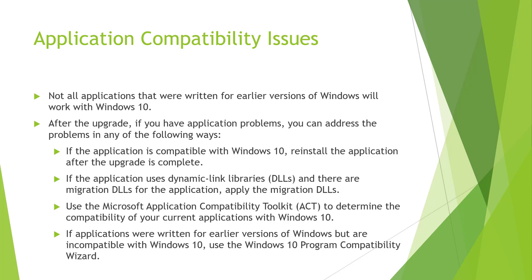Applications written for earlier versions of Windows might also be incompatible because of administrative settings. Windows 10 has the Program Compatibility Wizard to allow you to set certain compatibility settings on an application. This is not an exhaustive list, but it touches on the main core areas that might impact a user's ability to upgrade to Windows 10 due to application-based issues.